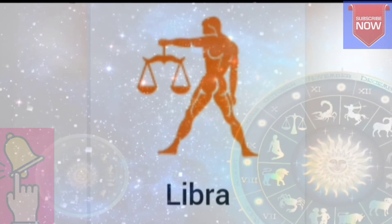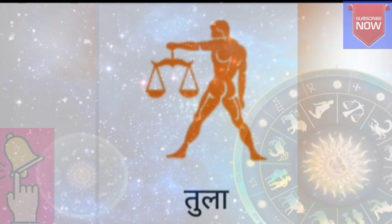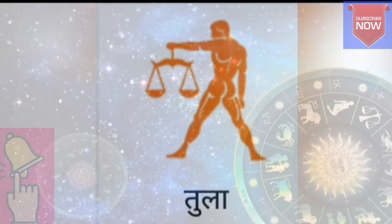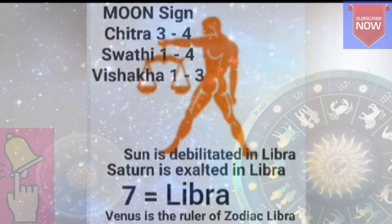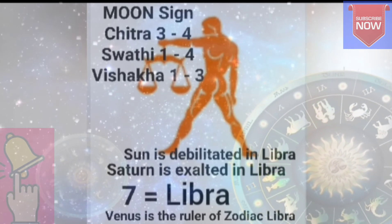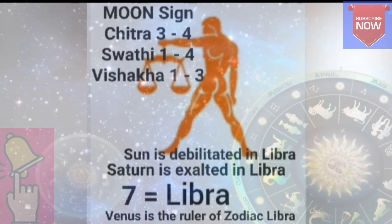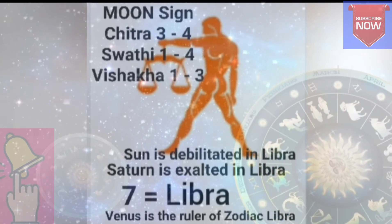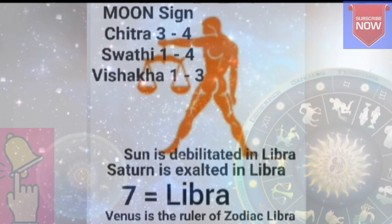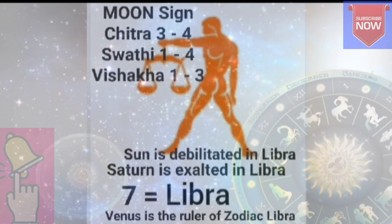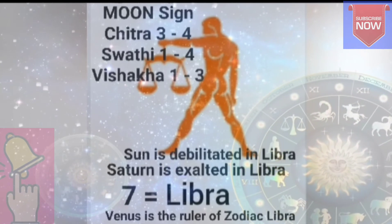Libra, number 7, is called Tula in Hindi. This Rashi is ruled by Venus. Saturn is exalted in Libra and Sun is debilitated in Libra. This Rashi contains the nakshatras: Chitra 3 and 4 Pada, Swati 1, 2, 3, and 4 Pada, and Vishakha 1, 2, and 3 Pada.